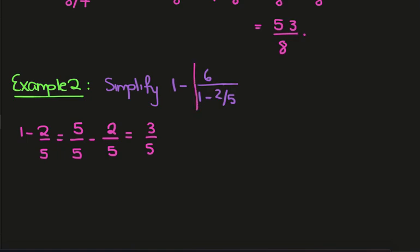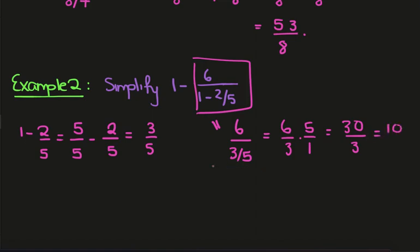So now this term here becomes 6 divided by 3 on 5. We just flip the denominator. So we have 6 on 3 times 5 on 1. Which is 30 over 3, which we can just write as 10. So now we have 1 minus 10, which is just minus 9.